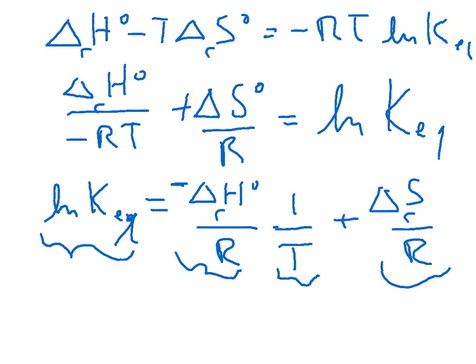Is equal to, we could say negative delta H over R times 1 over T plus delta S over R. When we write it this way, we can see we could call this Y, this M, this X, and this B.